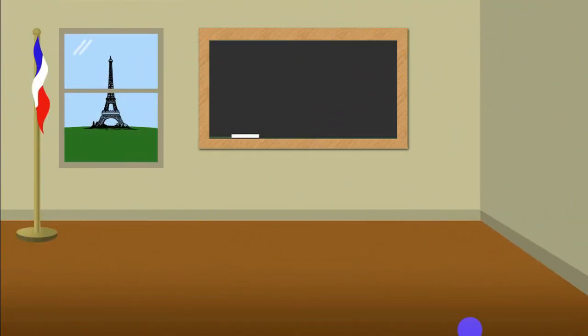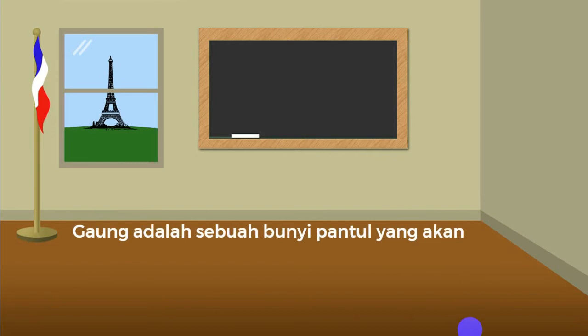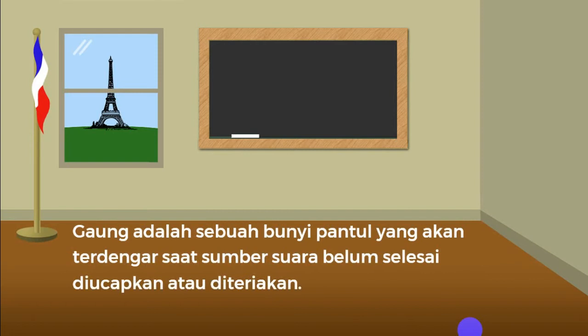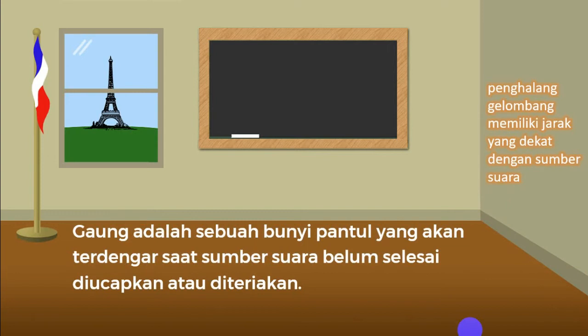Selanjutnya, kita akan belajar mengenai bunyi pantul. Bunyi pantul yang pertama adalah gaung. Gaung adalah sebuah bunyi pantul yang akan terdengar saat sumber suara belum selesai diucapkan atau diteriakkan. Ini terjadi karena penghalang gelombang memiliki jarak yang dekat dengan sumber suara. Contohnya, kalau kalian berada di dalam ruangan yang sangat sempit lalu berteriak, suara pantul yang terjadi itulah yang disebut gaung.